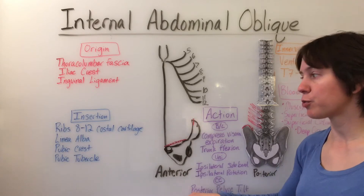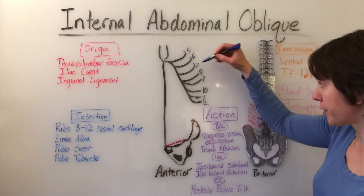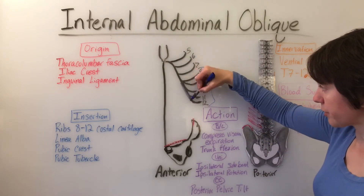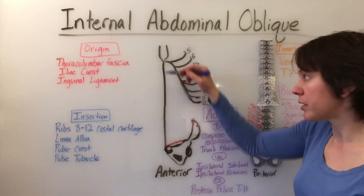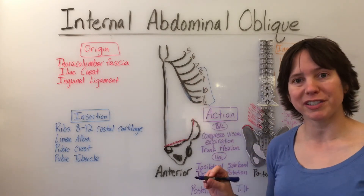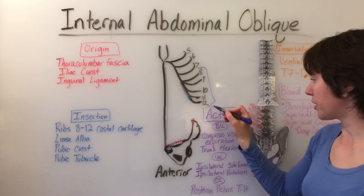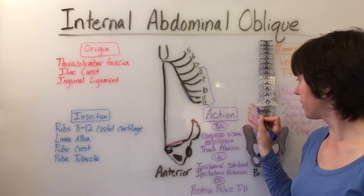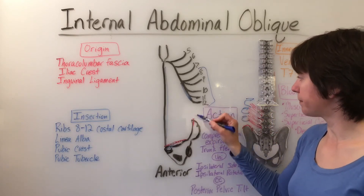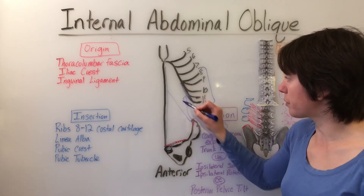The muscle will insert on ribs 8 through 12 costal cartilage — here's 8 through 12 costal cartilage — the linea alba, the pubic crest, and tubercle. So the muscle will wrap around to the anterior side where it will come and insert on these points.